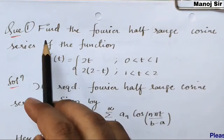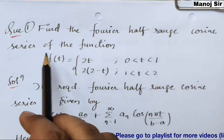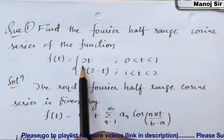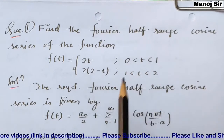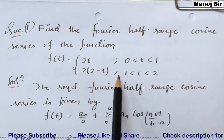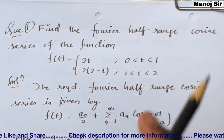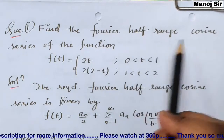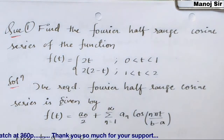The question says: find the Fourier half range cosine series of the function f(t) = 2t when t is from 0 to 1, and f(t) = 2(2 − t) when t is from 1 to 2. Since it is a half range cosine series, we need to find a₀ and aₙ.